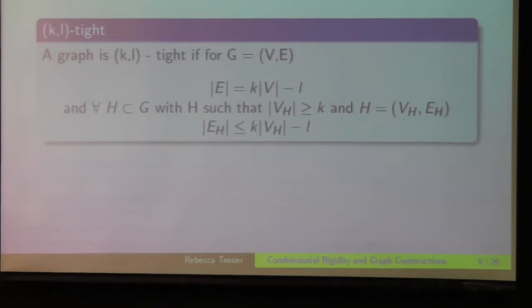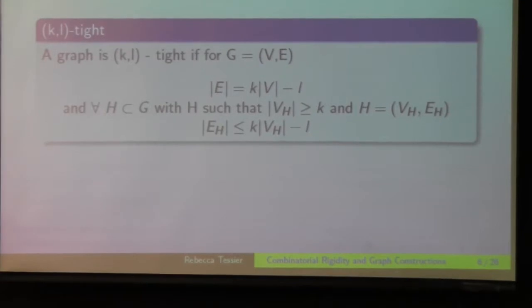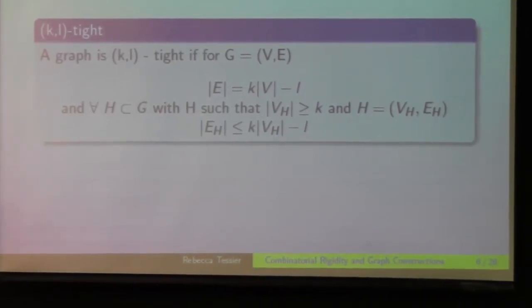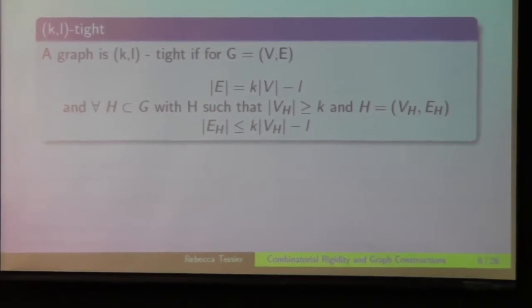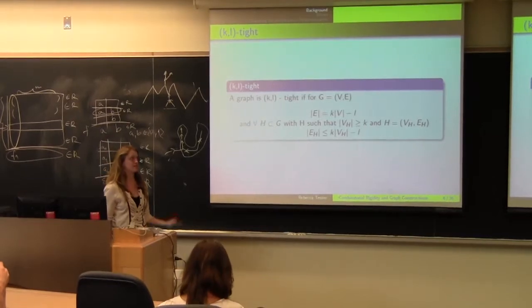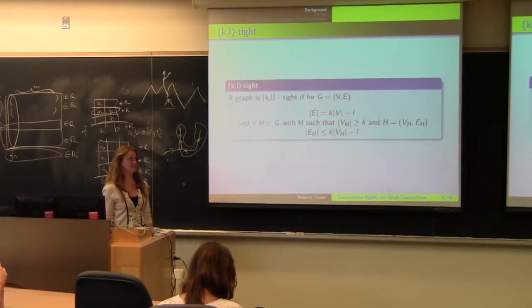And that brings me to my next definition, which is a KL-type graph. So a graph is KL-type for subgraph G if the number of edges is equal to k times the number of vertices minus L. And for all subgraphs H contained in that graph, such that the vertices of that subgraph are greater than or equal to k, the edges are less than or equal to k times the vertices minus L.